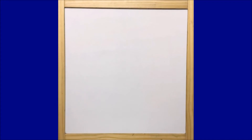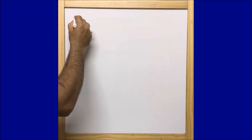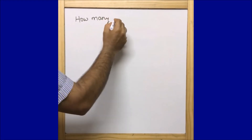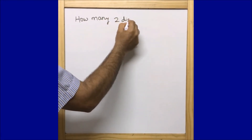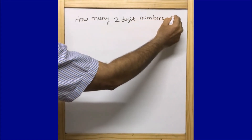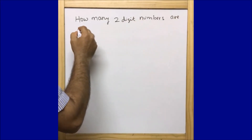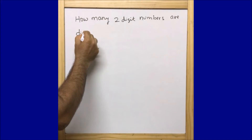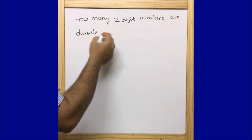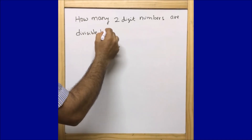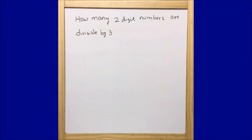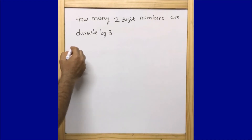With the help of this trick you can do it very quickly within some seconds. Let's move ahead. Suppose the given question is: how many two-digit numbers are divisible by three? We come across this type of question in arithmetic sequence, arithmetic series, or arithmetic progression — divisible by three.